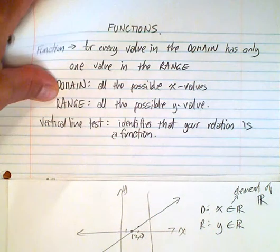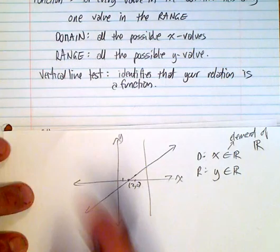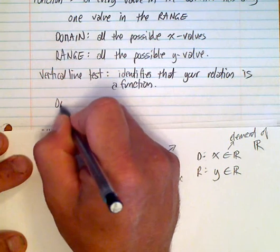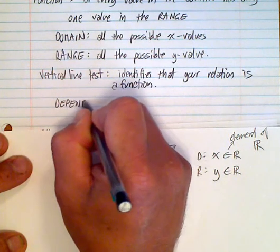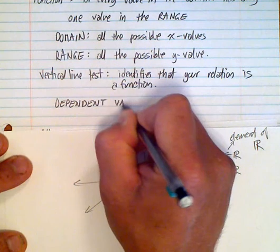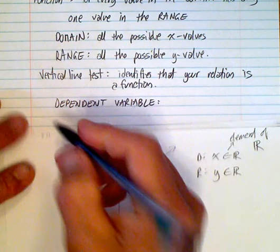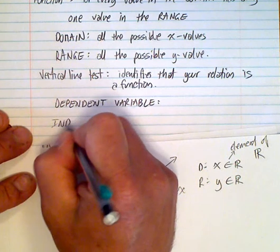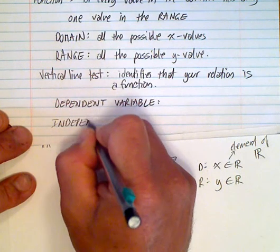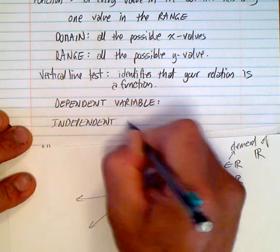So, one of them is dependent on the other. So, we have what we call a dependent variable, dependent variable. And then we have what we call an independent variable.